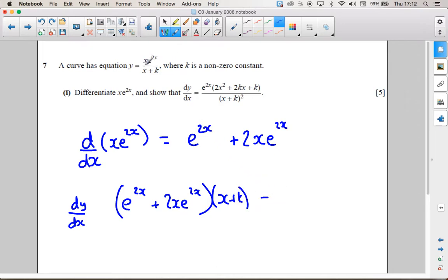minus, leave the bottom one alone, so xe to the 2x, and times by the differential of the bottom one, which is just 1. So we're just going to have that xe to the 2x, all divided by x plus k squared.